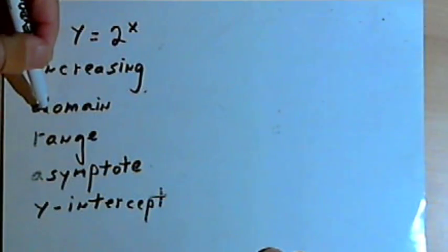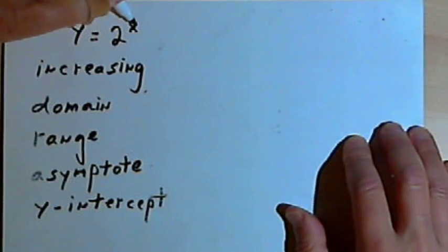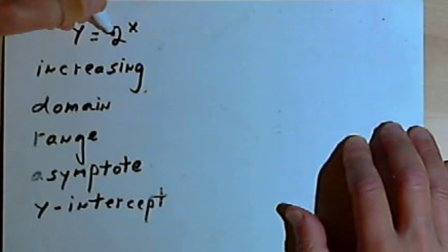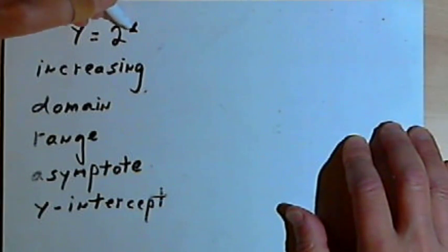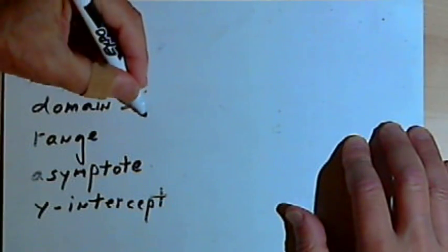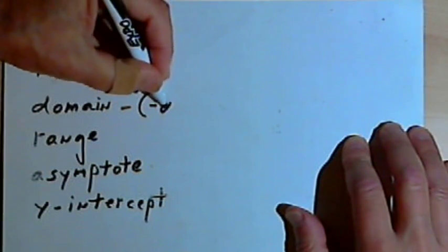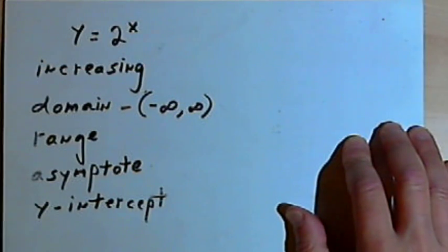We can figure out the domain of this by asking ourselves what values could x have. Since I can raise 2 to any power whatsoever — I can raise it to a negative number, a zero, or a positive number — that means x can be any value at all. So the domain is going to be all real numbers, or negative infinity to infinity.